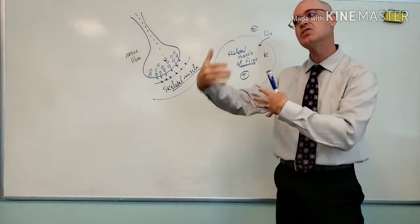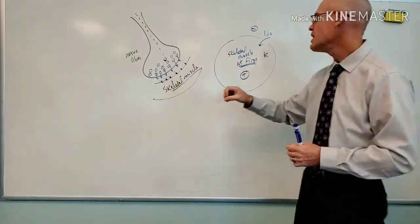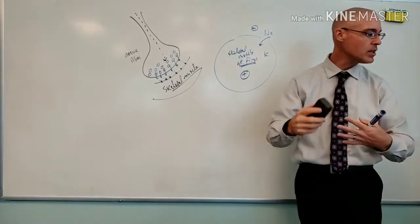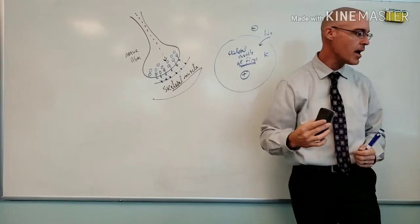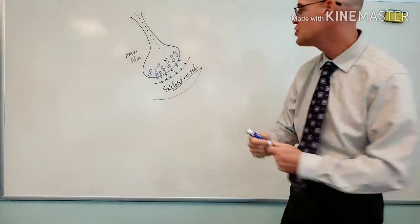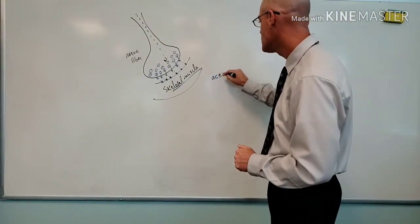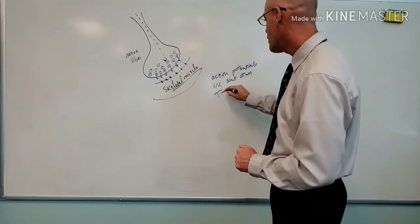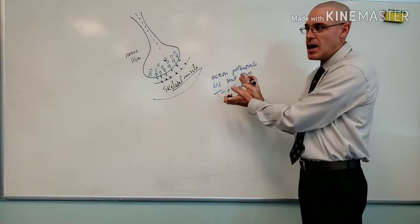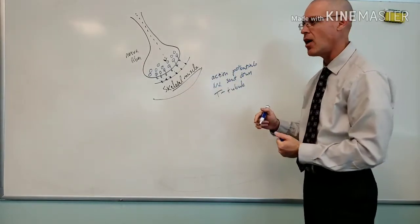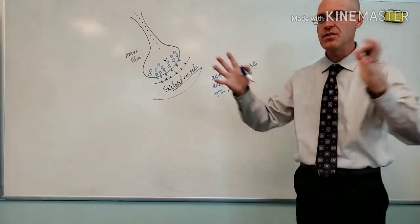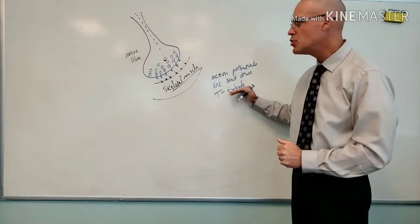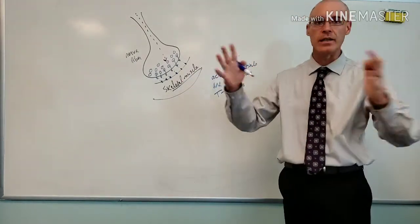That influx of sodium and the flip to a positive charge is what stimulates the skeletal muscle fibers. The next step is that action potentials are sent down the T-tubule. The T-tubule is an important and unique structure inside the skeletal muscle cell whose job is to send the action potentials out, electrically stimulating all of the skeletal muscle fibers.